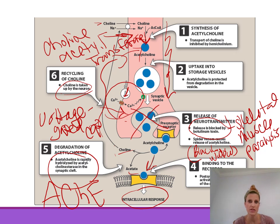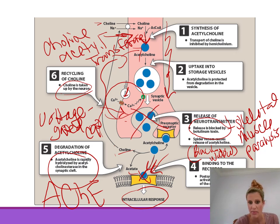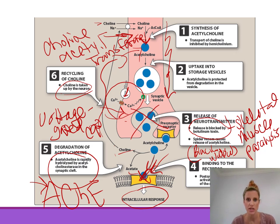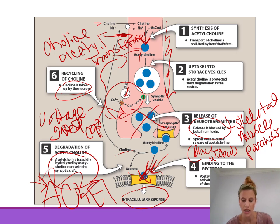There are multiple drug targets in this process. We could stimulate or block the release of acetylcholine. Drugs could bind to the acetylcholine receptor to either stimulate a response or block it — an agonist or antagonist. We could also inhibit acetylcholinesterase so acetylcholine is not broken down, allowing all released acetylcholine to be utilized. So there are multiple points for drug targets affecting the cholinergic neuron.